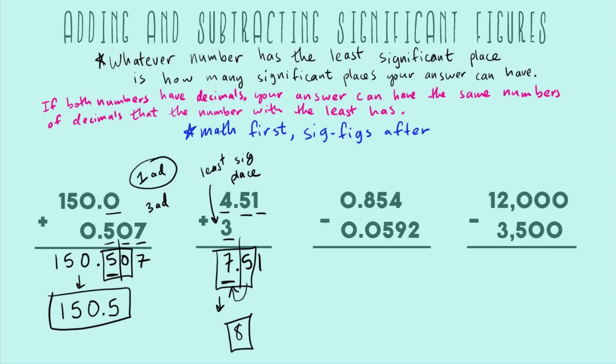That's two addition examples. Now let's move on to subtraction. The rule is exactly the same. I just want to show you some variety and practice problems. First we have 0.854 minus 0.0592. If you plug that into your calculator or take a couple seconds to do it, you get 0.7948.